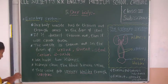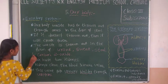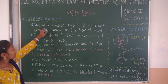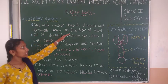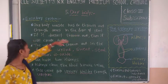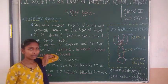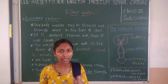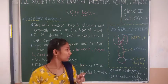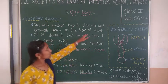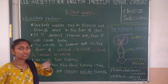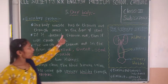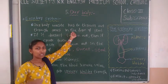Stool is the solid waste. The waste produced in our body has to be thrown out through the anus. The anus is our body organ through which the stool passes out and is thrown out from our body. So this is one kind of waste which is thrown out.